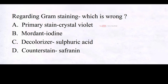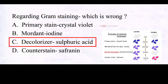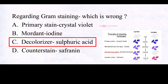In Gram staining, which of the following is incorrect? A. Primary stain: crystal violet, B. Mordant: iodine, C. Decolorizer: sulfuric acid, D. Counter stain: safranin. The correct answer is C. In gram staining, decolorization is typically performed using ethanol or acetone, not sulfuric acid. This step helps differentiate between gram positive and gram negative bacteria based on their cell wall structure.